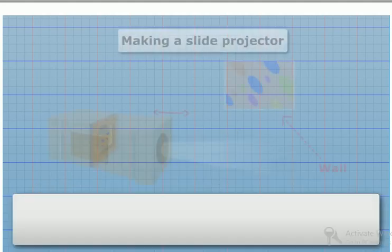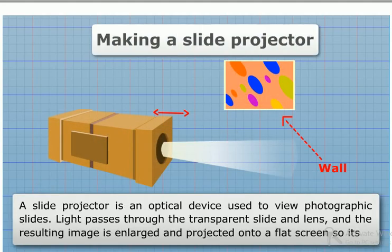Making a slide projector. A slide projector is an optical device used to view photographic slides. Light passes through the transparent slide and lenses, and the resulting image is enlarged and projected on a flat screen so its reflection can be viewed.